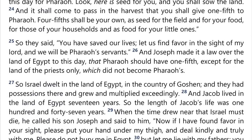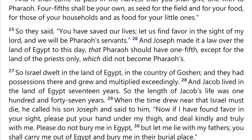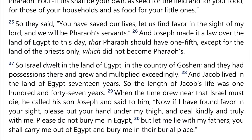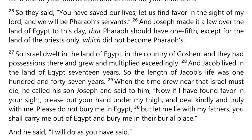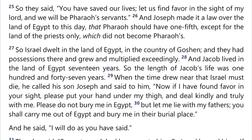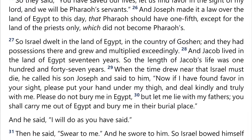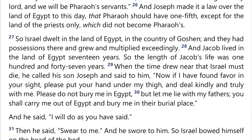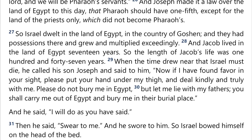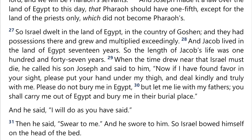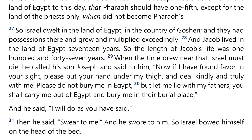So Israel dwelt in the land of Egypt, in the country of Goshen, and they had possessions there and grew and multiplied exceedingly. And Jacob lived in the land of Egypt seventeen years, so the length of Jacob's life was one hundred and forty-seven years. When the time drew near that Israel must die, he called his son Joseph and said to him, 'Now, if I have found favour in your sight, please put your hand under my thigh and deal kindly and truly with me. Please do not bury me in Egypt, but let me lie with my fathers. You shall carry me out of Egypt and bury me in their burial place.' And he said, 'I will do as you have said.' Then he said, 'Swear to me.' And he swore to him. So Israel bowed himself on the head of the bed.